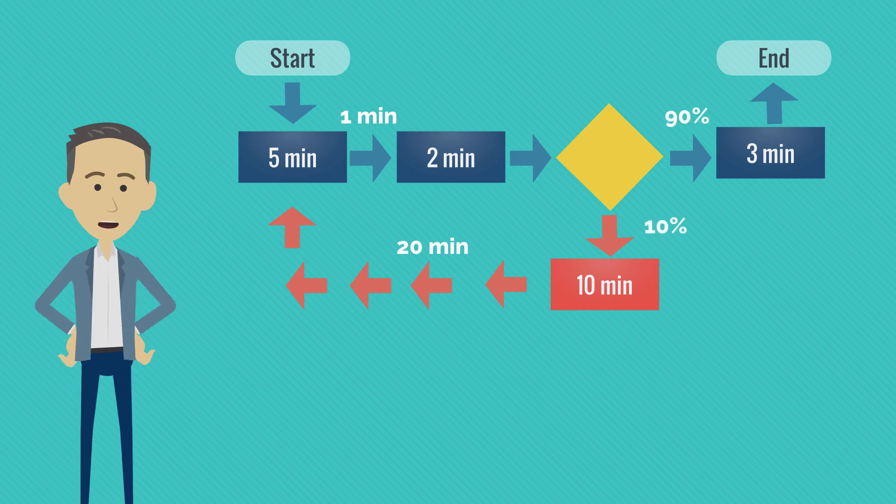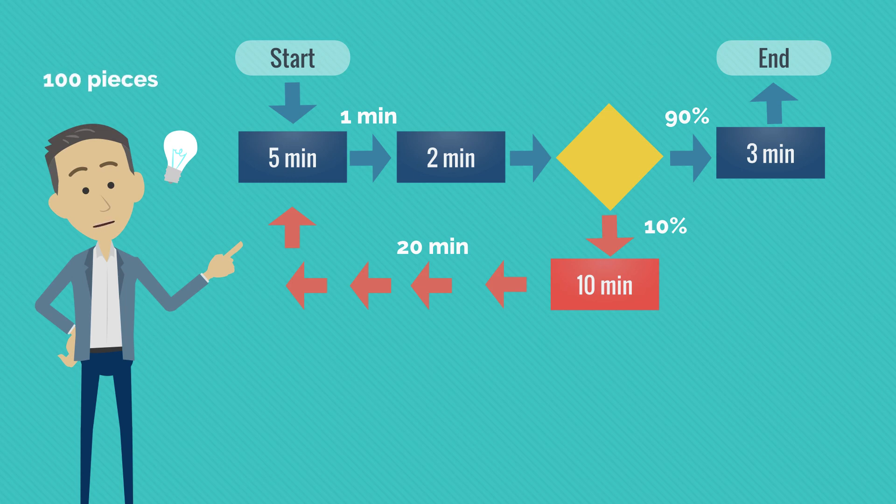If someone would ask you to calculate the average time to get the job done, how would you do it? A simple way is to imagine you have 100 pieces of work and you will calculate the average time for a single one.